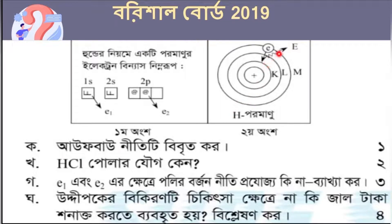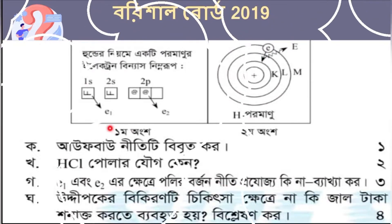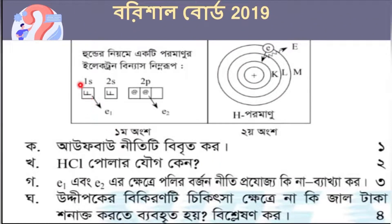Hello everyone. I am going to tell you that the electron is 0. M is equal to K. I will tell you that E1 is equal to E2. That means E2 is equal to 1 number of electron, and the electron is the same as the electron.